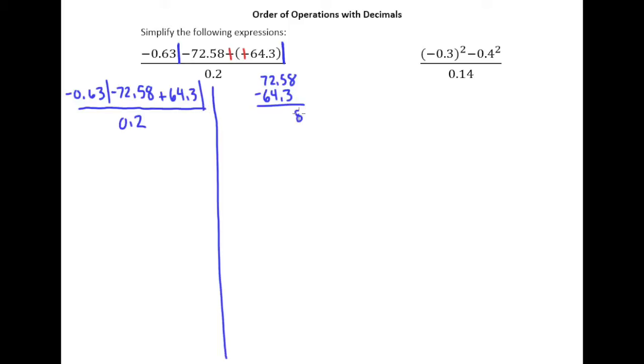So 8 minus 0 is 8. 5 minus 3 is 2. Then we need to do a little borrowing for this last part. Make that a 6. Make that a 12. So 12 minus 4 is 8. But of course, because the negative is on the bigger absolute value, we have a negative 8.28 in absolute value bars, still divided by 0.2.